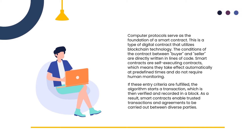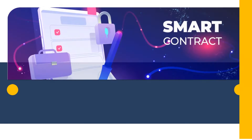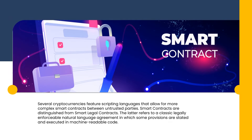If these entry criteria are fulfilled, the algorithm starts a transaction, which is then verified and recorded in a block. As a result, smart contracts enable trusted transactions and agreements to be carried out between diverse parties. Several cryptocurrencies feature scripting languages that allow for more complex smart contracts between untrusted parties.